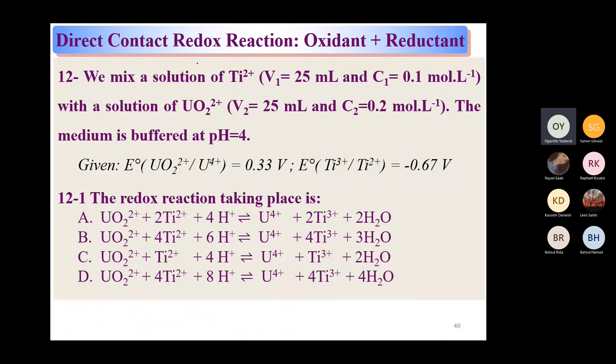Number 12. Direct contact redox reaction: oxidant and reductant. Direct contact, just so we know again, is that we're mixing the oxidant and reductant and that we're not splitting them into two separate cells. We're not getting a battery. It's a direct mixture. And eventually, the E of the solution, of the mixed solution together, is from the oxidant or from the reductant. Because when you mix them, eventually, the reaction reaches equilibrium and the delta E of the mixture is always equal to zero.